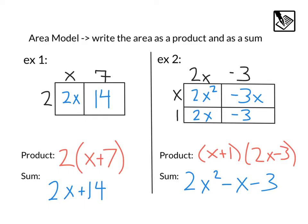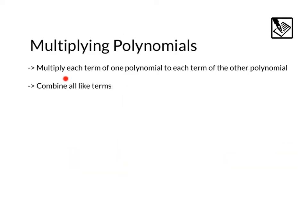These area models are helpful for us to visualize how we can multiply polynomials. But eventually, we want to do those without drawing area models, so let's get to a few examples of that. To do this, we're going to multiply each term of one polynomial to each term of the other polynomial. In our area model, that's represented by the small rectangles. Then, we can combine all like terms.